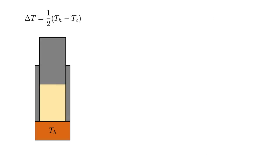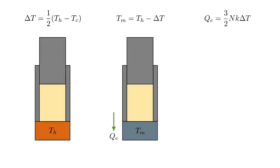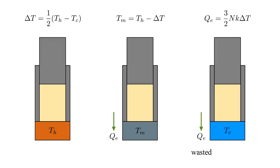We can cut this waste in half by cooling the gas in two steps, each with temperature change delta T equal to one-half the total temperature change, T hot minus T cold. For the first step, we connect the gas to a reservoir at temperature T medium, midway between T hot and T cold. The temperature change is half what it was before, so the transferred heat QE is also half what it was before. Then we connect the gas to the cold reservoir to reduce its temperature by delta T again, transferring another QE of heat. So now only half the total heat extracted from the gas is wasted; the other half is stored in the T medium reservoir.